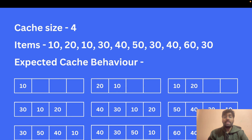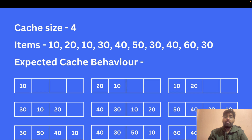Let's suppose the capacity of our cache is 4, and the items given to us are: 10, 20, 10, 30, 40, 50, 30, 40, 60, and 30. He asked me what data structure I would use to design the cache. For the brute force approach, I told him I would use an array. This is the array I've taken, with capacity 4.